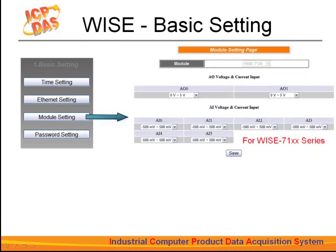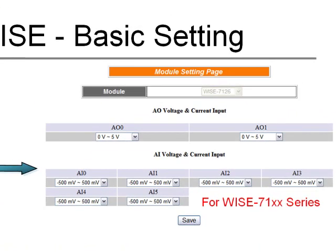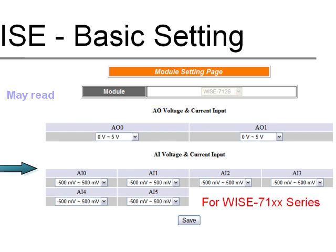Module settings can be a bit more complicated. Taking the 71XX series product as an example, different modules may come with different AI or AO channels, and they may differ in range or type. Some modules may be able to read RTD measurements; some may read thermocouple measurements. Even for the most basic operations, such as voltage reading, the settings may vary. You can set the AI range to be plus or minus 1 volt or plus or minus 5 volts, and set up different reading ranges for each channel.